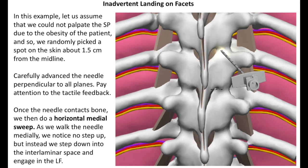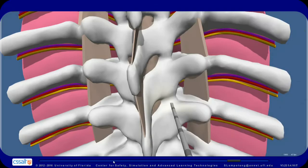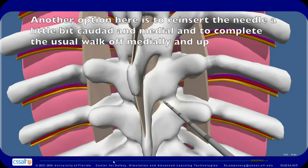Next, we will discuss what happens when you inadvertently land on facets. When you land on facets, as we walk the needle medially, we notice no step up, but instead we may step down into the interlaminar space. Another option here is to reinsert the needle a little bit caudad and medial and to complete the usual walk off medially and up.